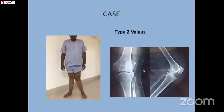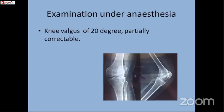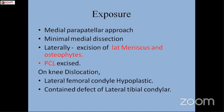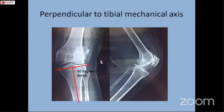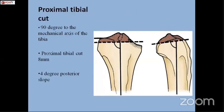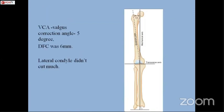In our case, this was a type 2 valgus with intact MCL and partially correctable lateral side. Under anesthesia, the correction was partially correctable. We used a medial parapatellar arthrotomy approach with minimal medial resection, and laterally complete excision of lateral meniscus, osteophytes, and PCL. On knee dislocation, the lateral femoral condyle was hypoplastic as expected, with contained tibial defects. The proximal tibial cut was taken perpendicular to the mechanical axis of the tibia, with a slope of 4 degrees depending on the implant system. The valgus correction angle was 5 degrees, with distal femoral cut of around 6 mm — the lateral condyle didn't require much resection.